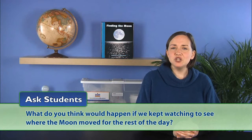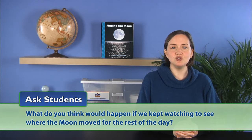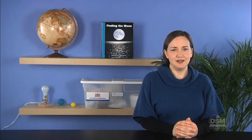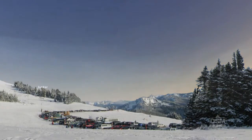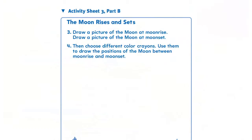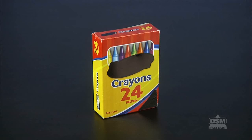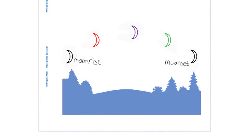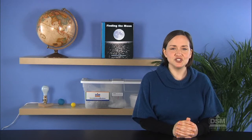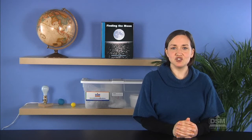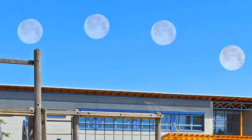Ask students: What do you think would happen if we kept watching to see where the moon moved for the rest of the day? Students should conclude that eventually the moon would get so low in the sky that they would no longer be able to see it. Elicit that it would set, just like the sun sets. Next, distribute a copy of Activity Sheet 3 Part B to each student and a box of crayons to each team of two. Help students complete the sheet. Remind students that the turning of Earth causes sunrise and sunset. Ask students: What do you think causes the moon to appear to move across the sky? Students may guess the turning of Earth also causes the moon to appear to move across the sky.